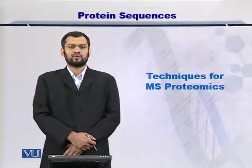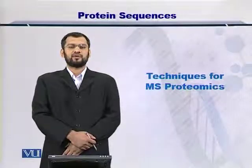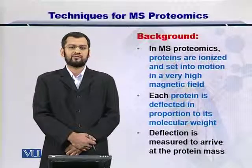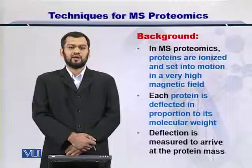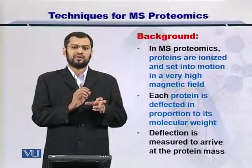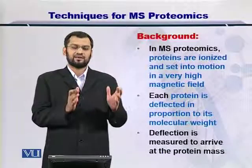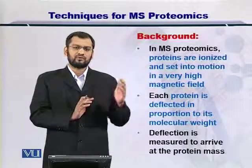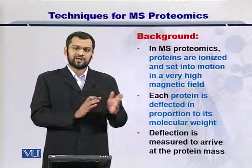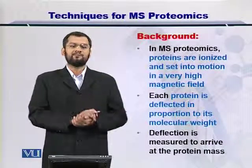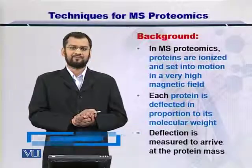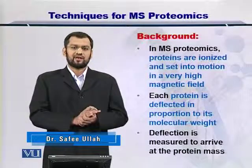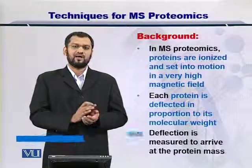Dear students, in this module we are going to see the techniques that are used for MS-based proteomics. In MS-based proteomics, a protein is ionized wherein some charge is added onto the protein and the protein is set into motion within a magnetic field, which is a part of a mass spectrometer. Once the protein is moving within this magnetic field, it is deflected in its motion and its trajectory in proportion to the mass it has. These deflections are therefore proportional to the mass and can be measured, and therefore you can arrive at the mass of the protein.